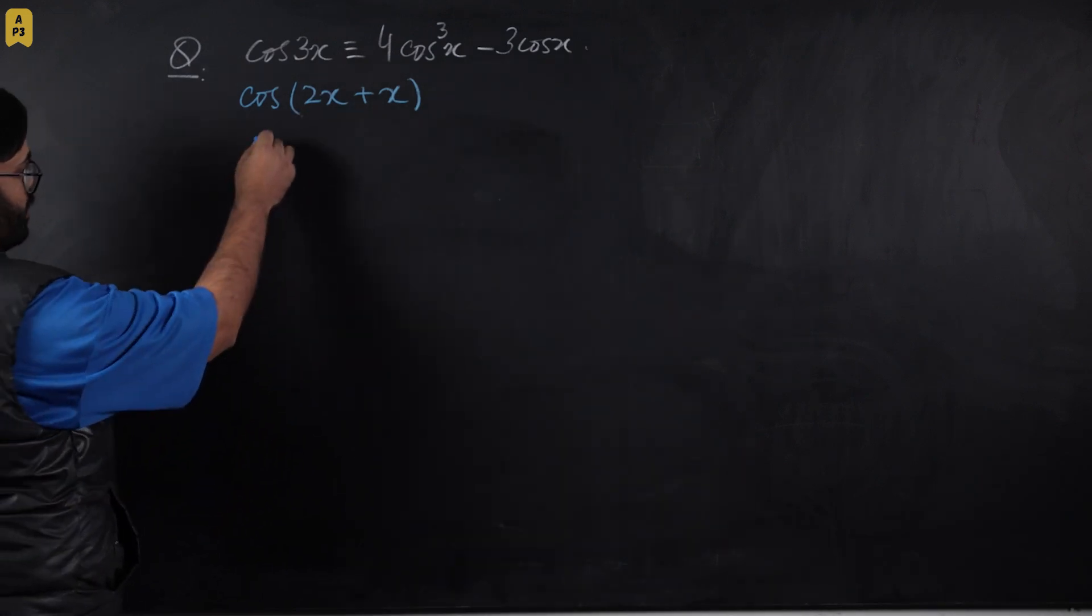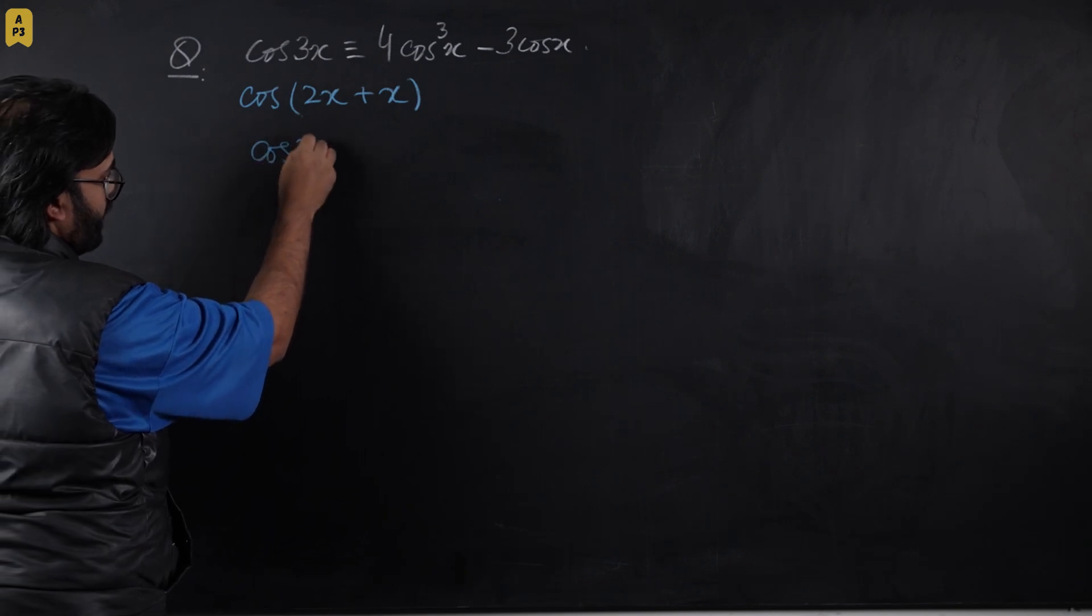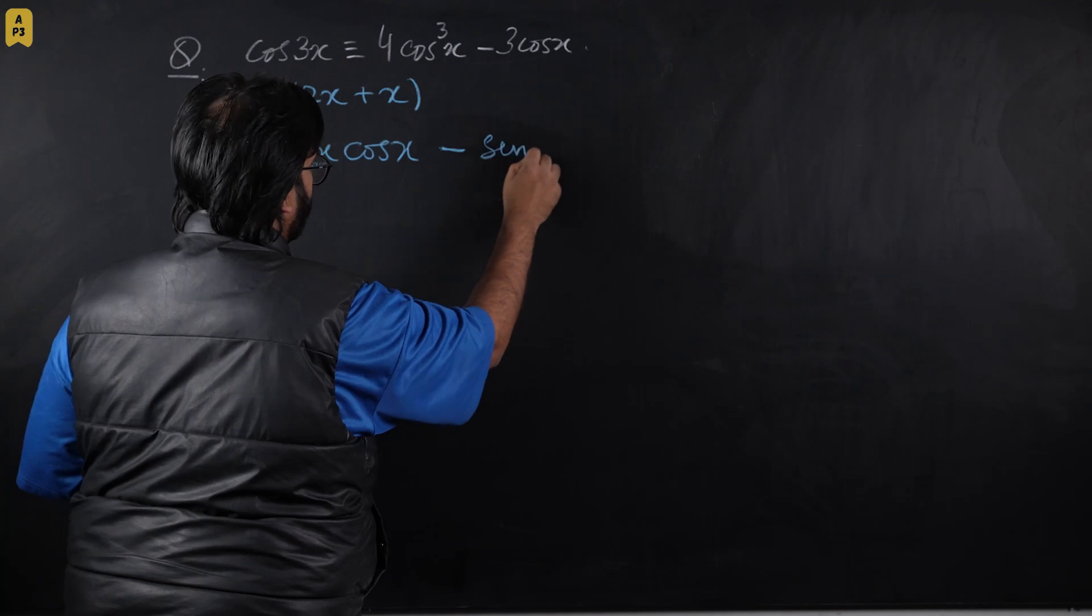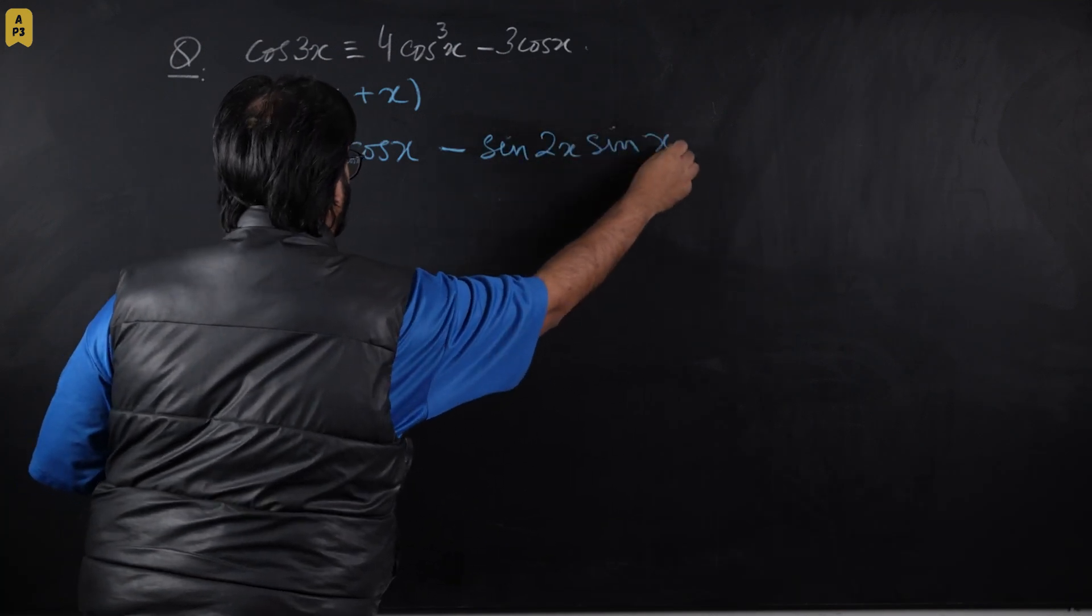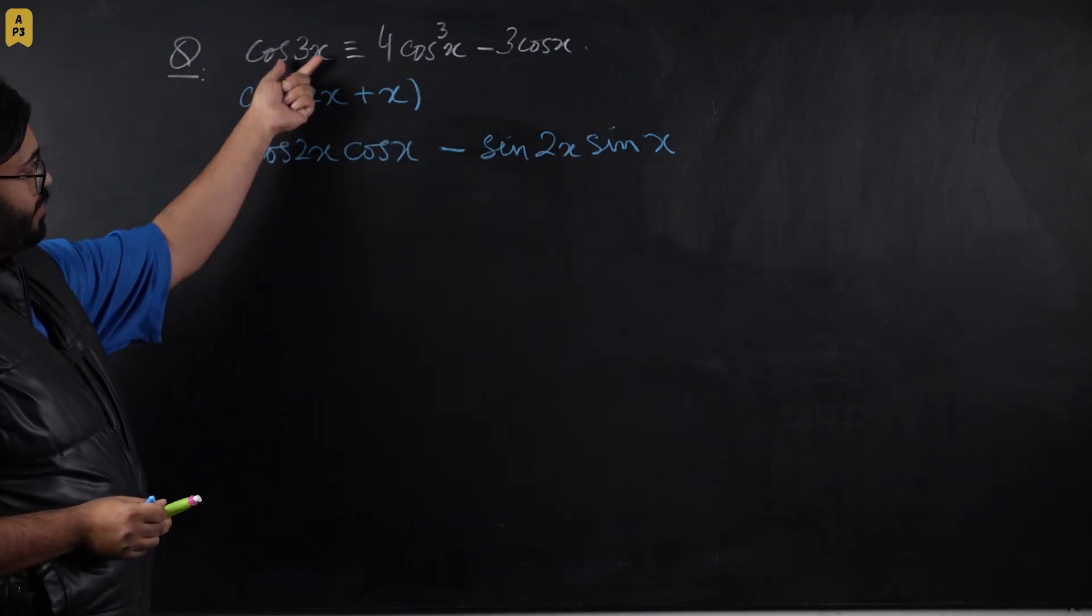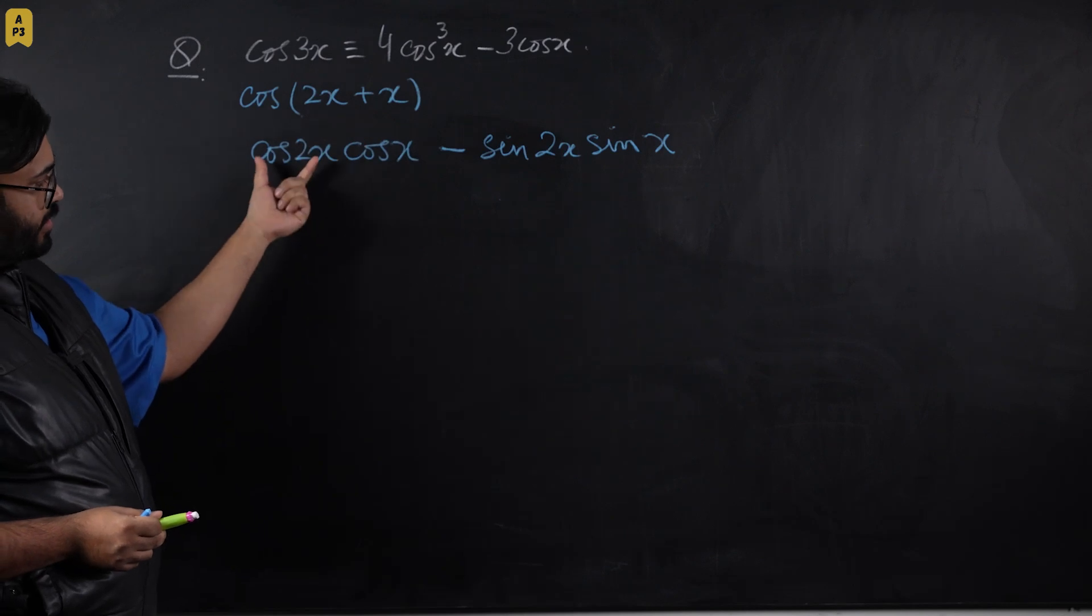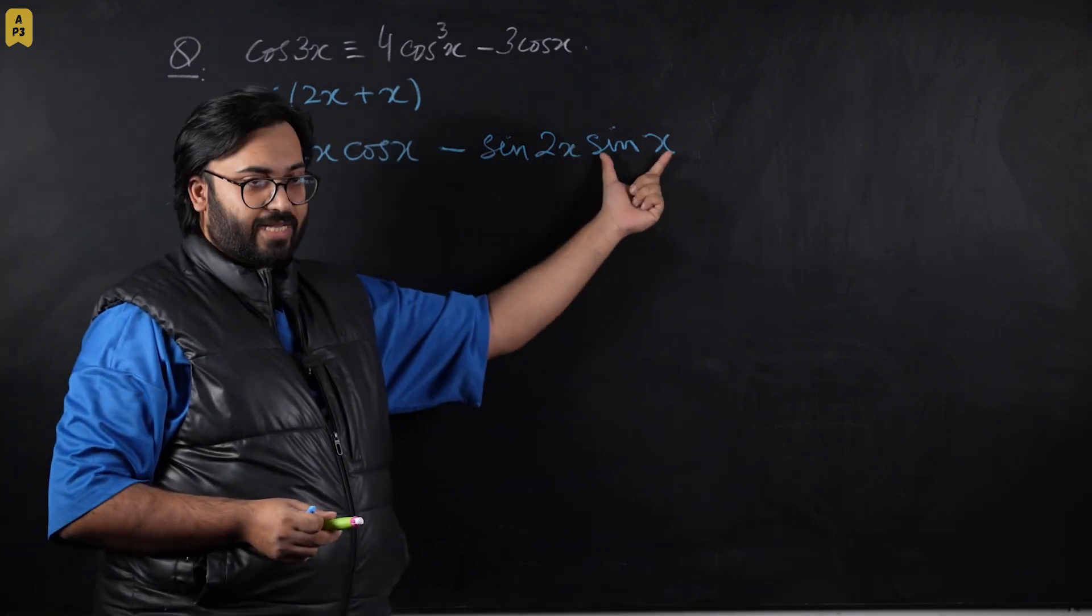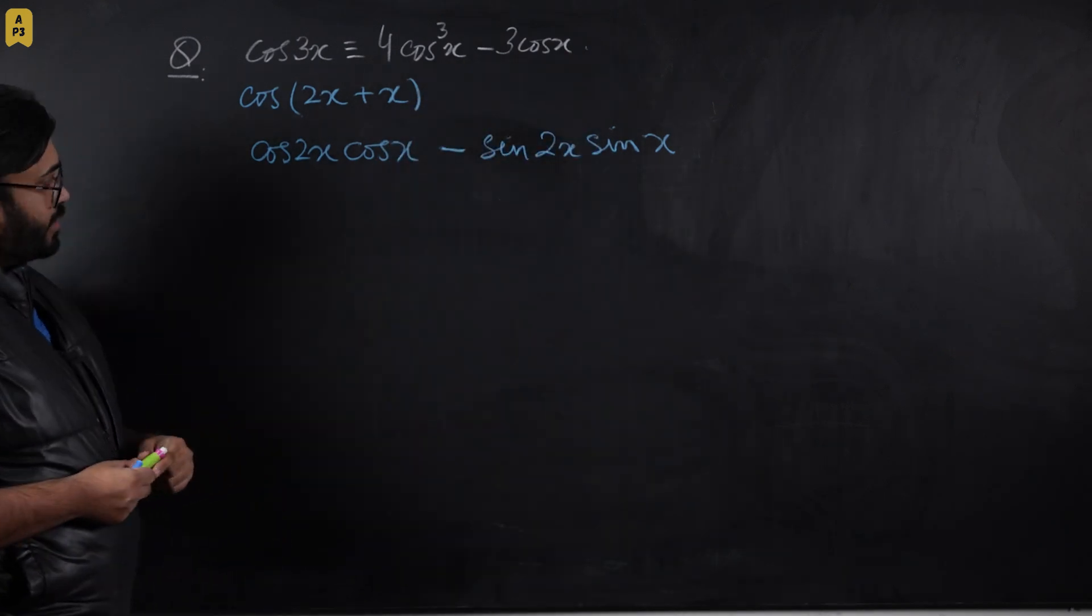Let's apply the compound angle formula for cos: cos A cos B minus sin A sin B. What we have achieved so far is breaking down the angle 3x into two different terms with angle 2x and two terms with angle x. Our final goal is to reach singular angle x.